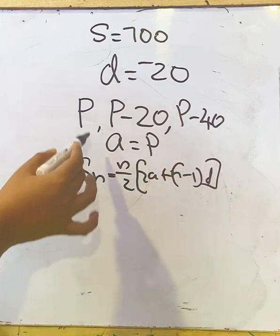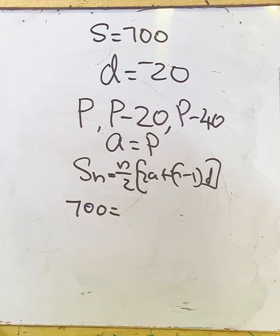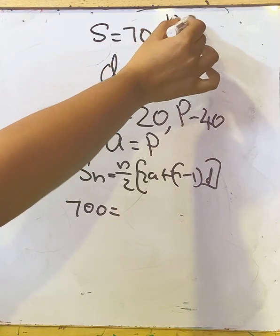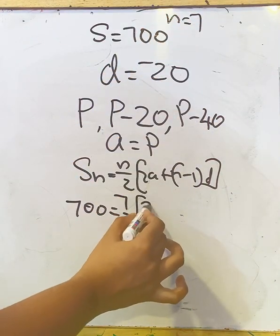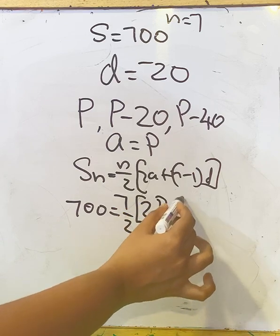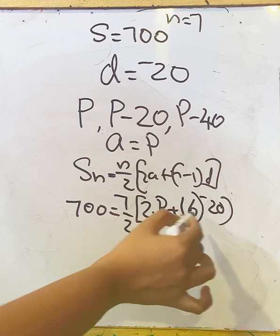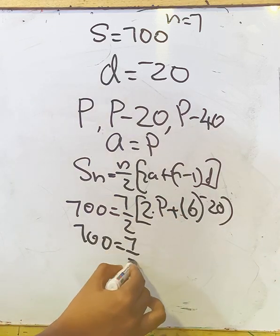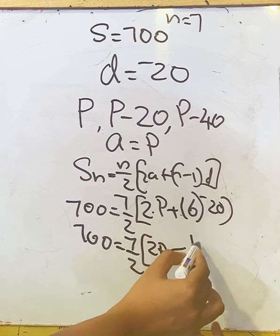Here we know the sum, that is 700. N, we know it is given in the question: 7 cash prizes, so n = 7. So 700 = 7/2 × [2P + (7-1)(-20)]. Again, 700 = 7/2 × [2P + 6(-20)]. That gives 700 = 7/2 × (2P - 120).